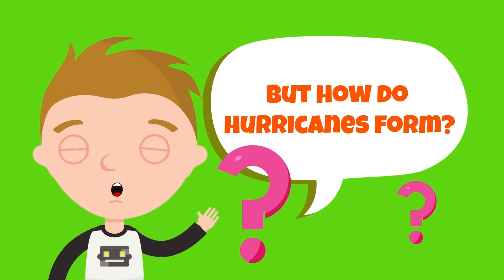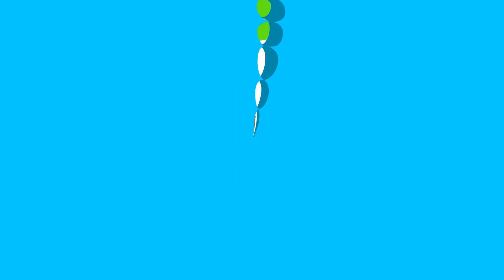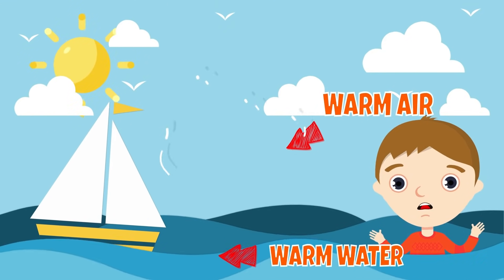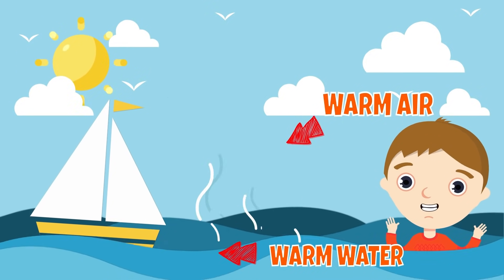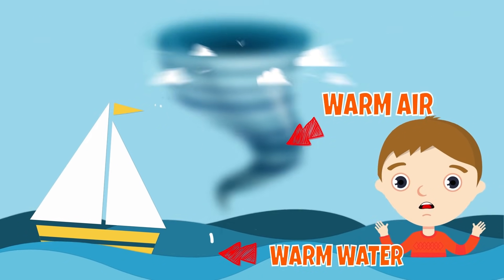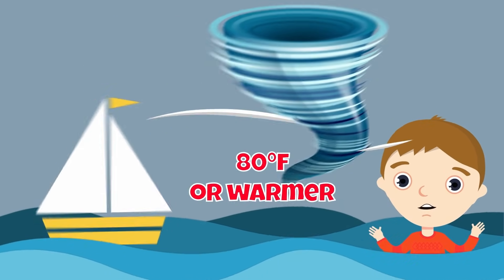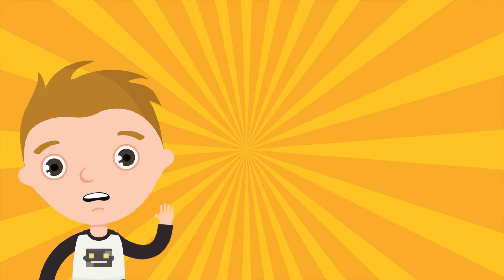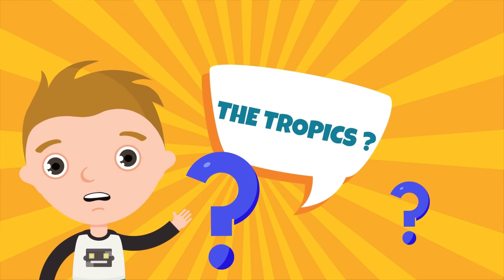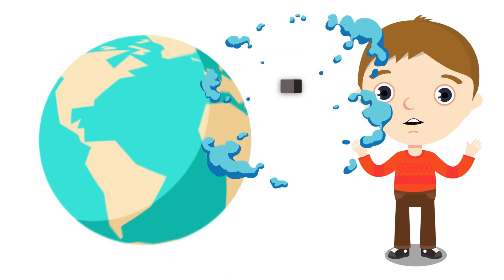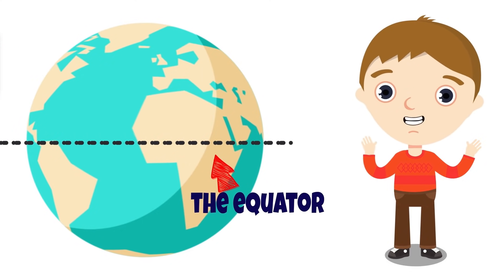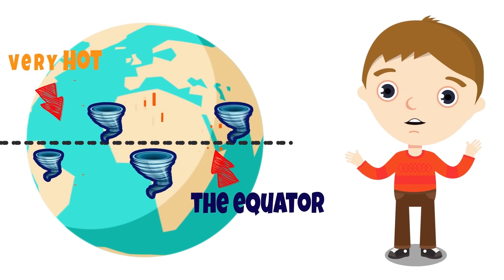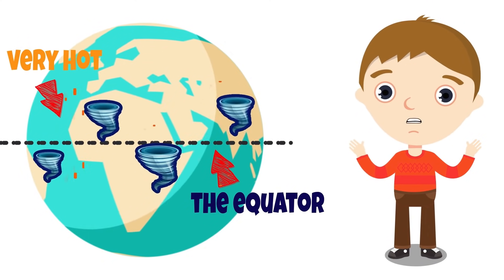Wow, that sounds very scary. How do hurricanes form? Hurricanes form over the ocean water of the tropics — only over really warm ocean water of 80 degrees Fahrenheit or warmer. The tropics is the area near the equator. Do you know that imaginary line drawn around the center of the earth?